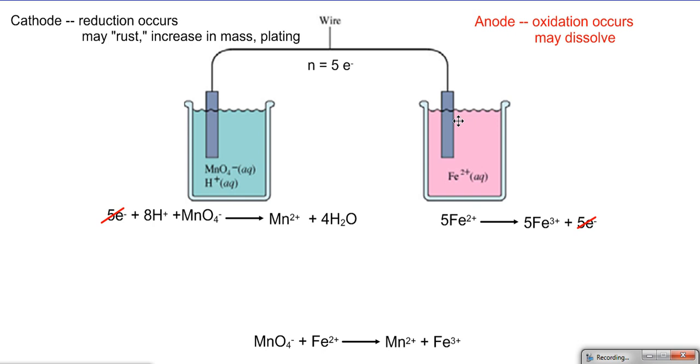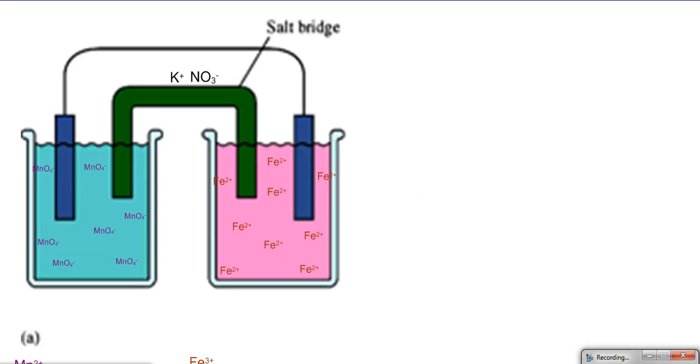And no matter what the electron potential is, no matter how much there's a pull for those electrons to go from the iron to the permanganate, it is eventually going to slow down or stop because there's a buildup of a negative charge here. Electrons don't want to go towards something that's negative, so this diagram is actually only going to work for a short amount of time.